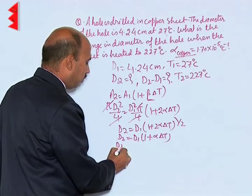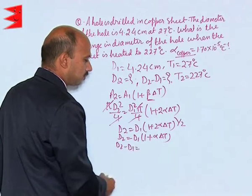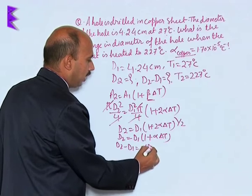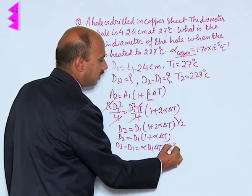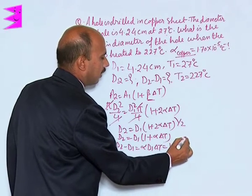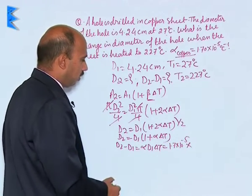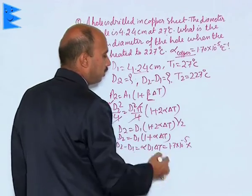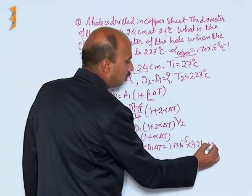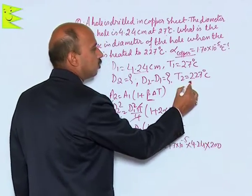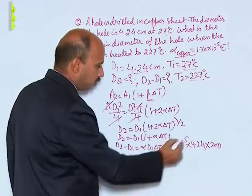Now we can write D2 minus D1 is equal to alpha D1 delta T. Alpha is equal to here 1.7 into 10 raised to power minus 5. D1 is given to you 4.24, and delta T is given to you 200, that's 227 minus 27.